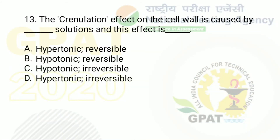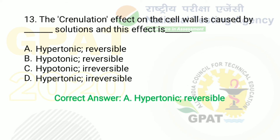The question: the crenation effect on cell wall is caused by dash solution and this effect is dash. Option A: hypertonic, reversible. Option B: hypotonic, reversible. Option C: hypotonic, irreversible. Option D: hypotonic, irreversible. The right answer is option A — the crenation effect on cell wall is caused by hypertonic solution and this effect is reversible.